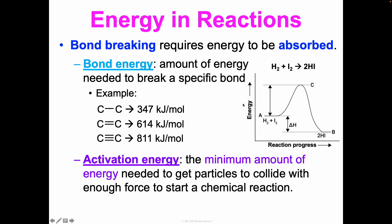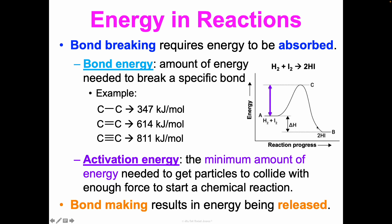Looking at this potential energy diagram — the x-axis shows reaction progress, so as we move to the right the reaction is happening. Point A represents the energy at the start of the reaction — the energy in the bonds of the existing reactants. From A to C, that's the activation energy: how much energy needs to be input to break the existing bonds between the hydrogen atoms and iodine atoms. Once that energy is input, we see energy start to be released as new bonds are formed, which is why the line starts to go down.